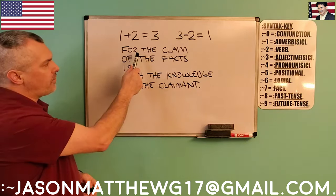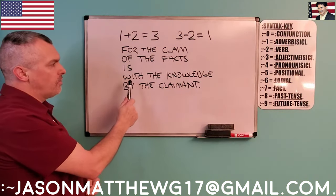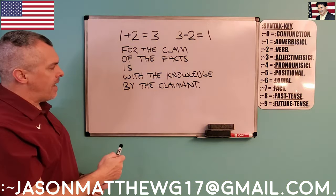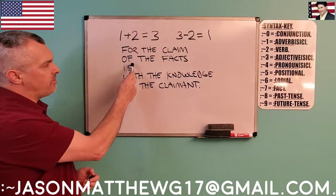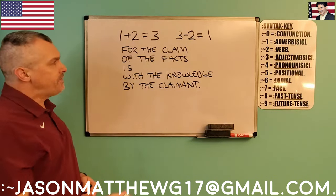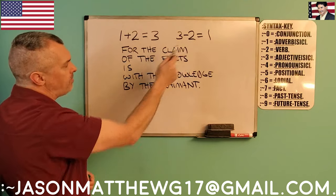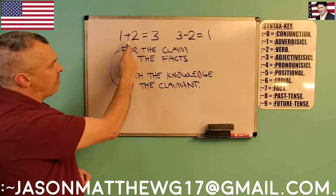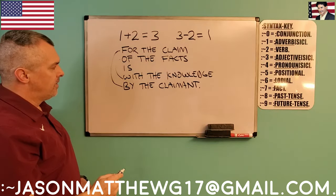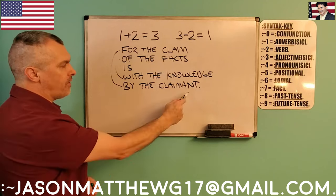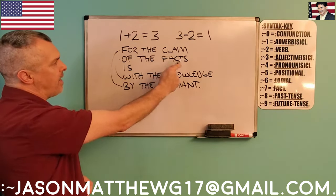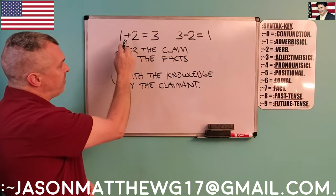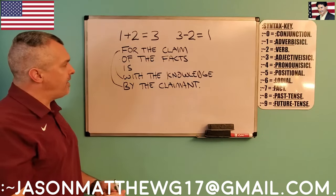So you see here: 'For the claim of the facts is with the knowledge by the claimant.' Backwards, that becomes: 'For the claimant of the knowledge is with the facts by the claim.' What's happening here is the same thing that's happening with the math. 'For' becomes 'by,' 'of' becomes 'with' — plus becomes minus. The positionals are the key to this; they function much the same way as the plus and minus, the order of operations.